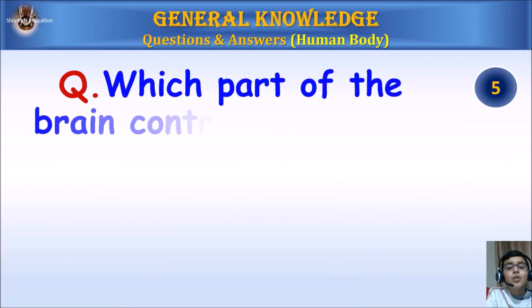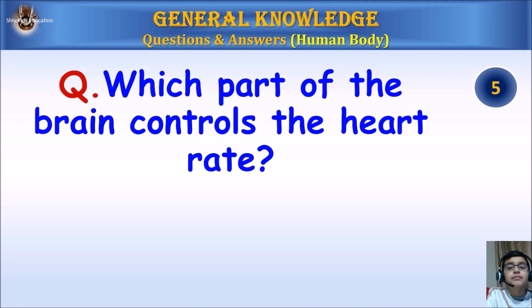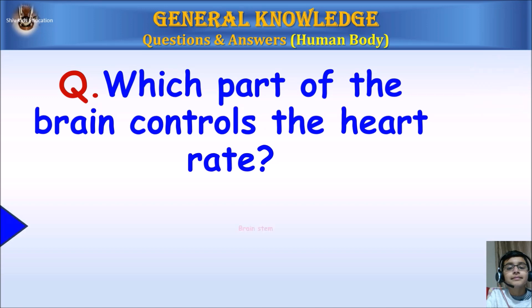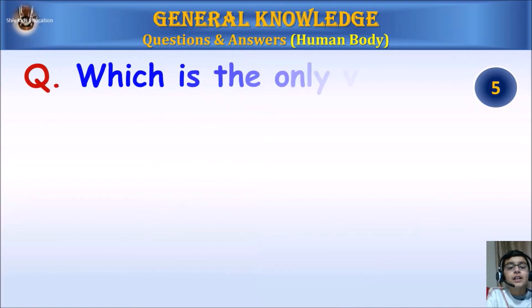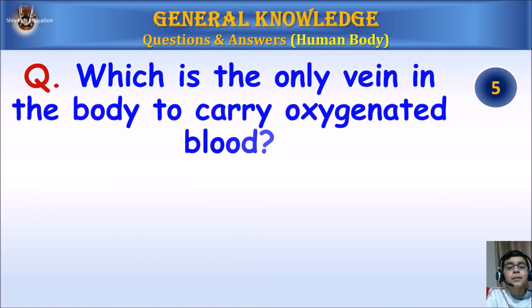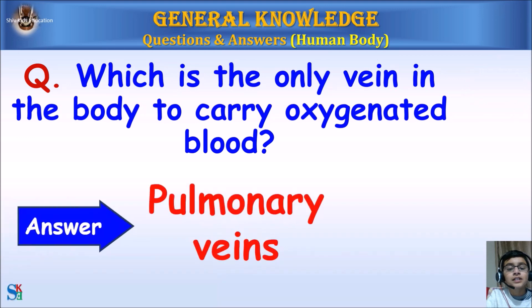Which part of the brain controls the heart rate? Which is the only vein in the body to carry oxygenated blood? Answer: Pulmonary veins.